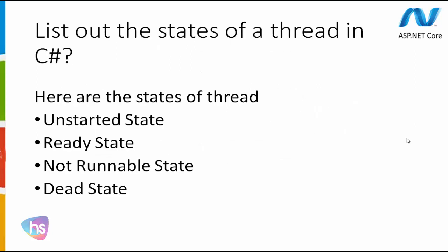The next question is: list out the states of a thread in C-Sharp. The states of a thread are: Unstarted state, which is the initial state; Ready state; Not Runnable state; and Dead state. These are the states available for execution of a thread in C-Sharp.